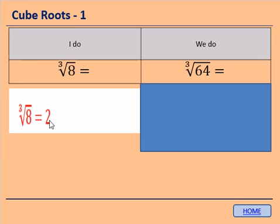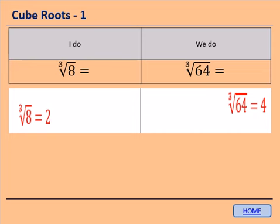Please pause the video here, copy that down, and then try the We Do: cube root of 64. The cube root of 64 is 4, because 4 times 4 times 4 — 4 cubed equals 64. So the cube root of 64 does the opposite and equals 4.